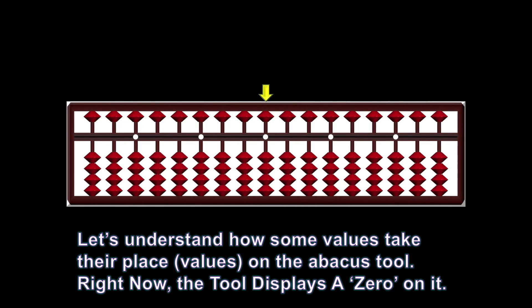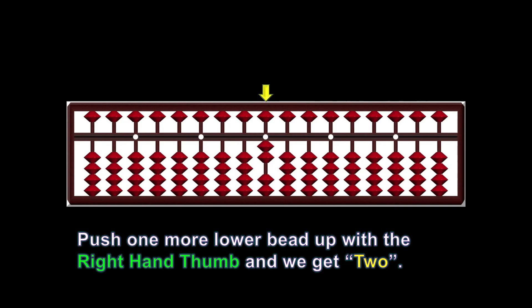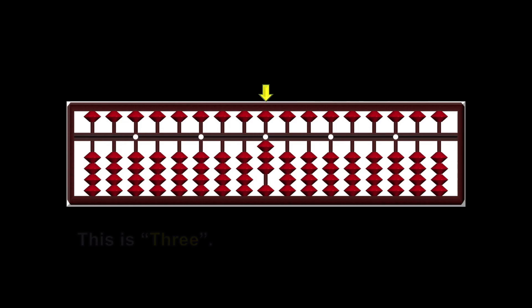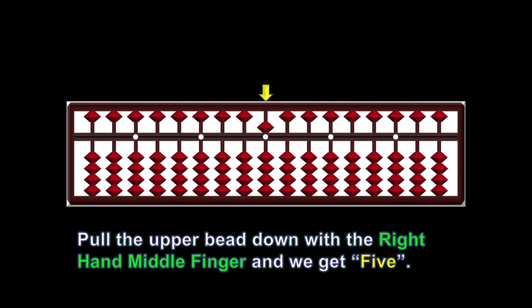Let's understand how some values take their place on the Abacus tool. Right now the tool displays zero. Push one lower bead up with the right hand thumb and we get the value 1. Push one more lower bead up and we get 2. This is 3, this is 4. Now pull the upper bead down with the right hand middle finger and we get 5. The upper bead in the upper deck on the units rod has a value of 5.